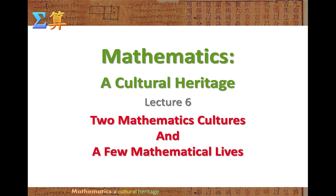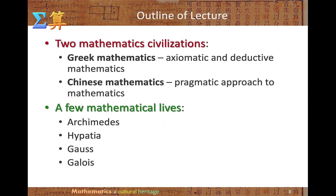Lecture 6: Two Mathematics Cultures and a Few Mathematical Lives. We will first talk about two mathematics civilizations: Greek mathematics and Chinese mathematics. Then we will talk about a few mathematical lives including Archimedes, Hypatia, Gauss, and Galois.